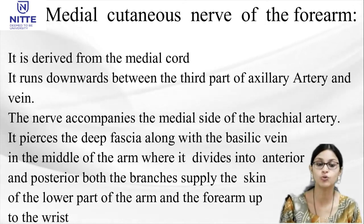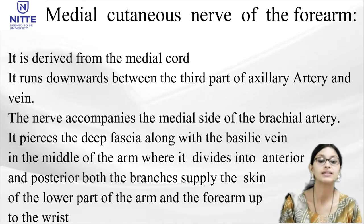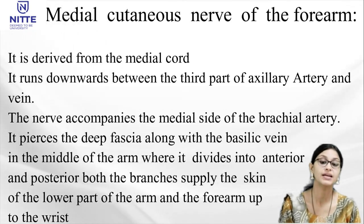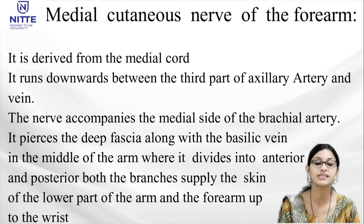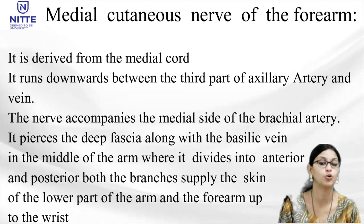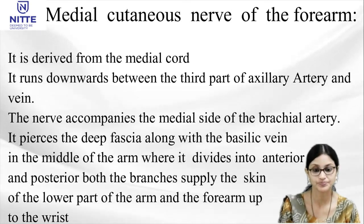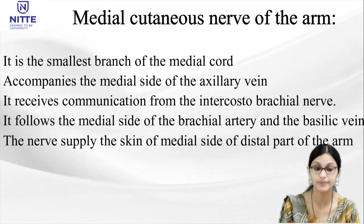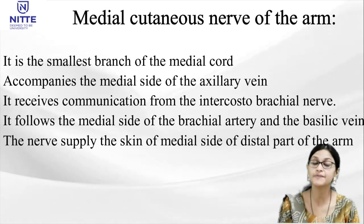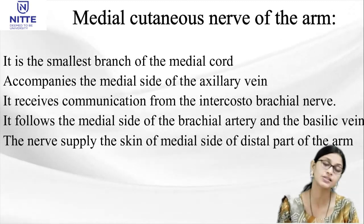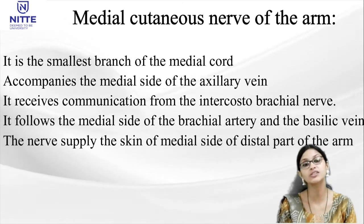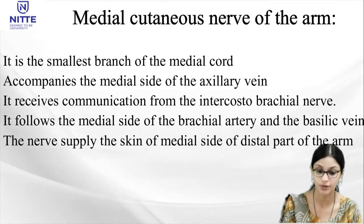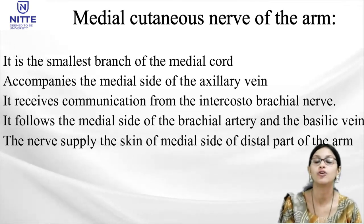The medial cutaneous nerve of the forearm descends between the third part of axillary artery and vein, accompanies the medial side of the brachial artery, and pierces the deep fascia along with the basilic vein in the middle of the arm, dividing into anterior and posterior branches. It supplies the skin of the lower part of the arm and forearm up to the wrist. The medial cutaneous nerve of the arm is the smallest branch of the medial cord, accompanies the medial side of the axillary vein, and receives communication from the intercostal brachial nerve — the undivided lateral cutaneous nerve of the second intercostal nerve. It supplies the skin of the medial side of the distal part of the arm.